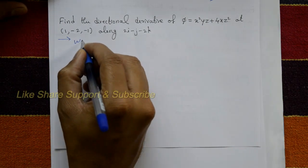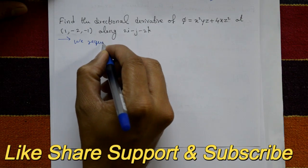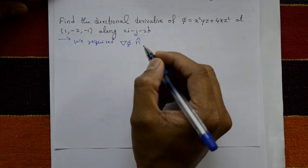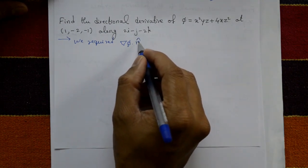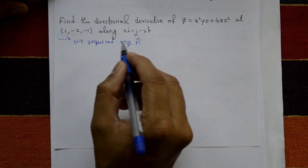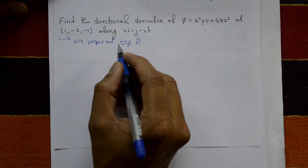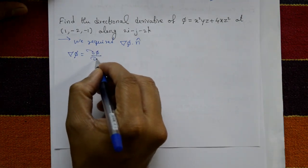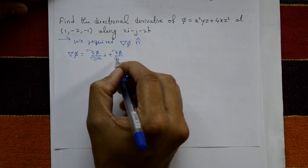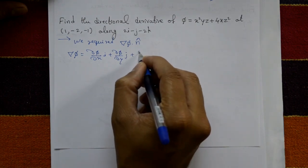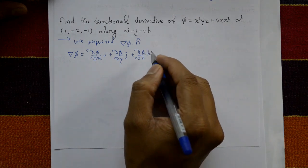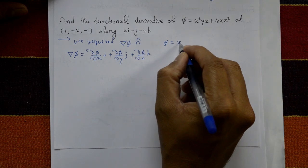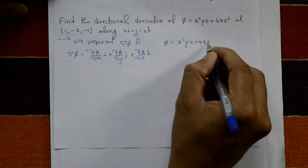The directional derivative is del phi dot n-hat, where n-hat is the unit vector. Del phi is given by: do phi by do x times i, plus do phi by do y times j, plus do phi by do z times k. And phi is given as x squared y z plus 4x z squared.